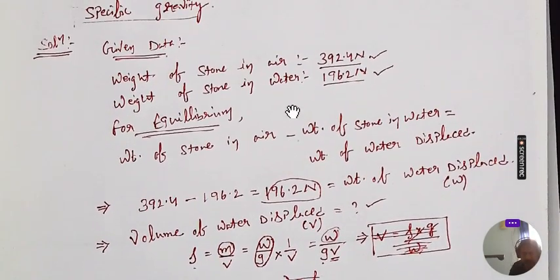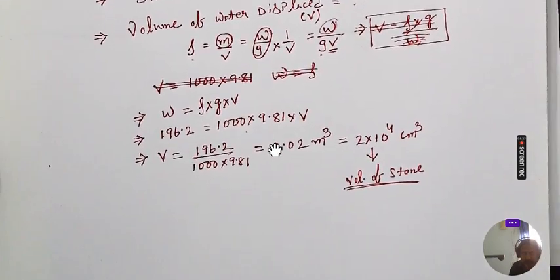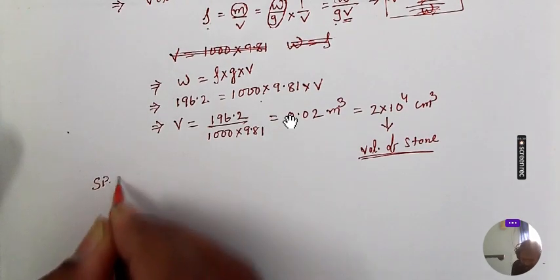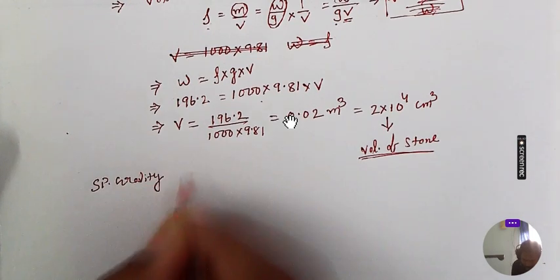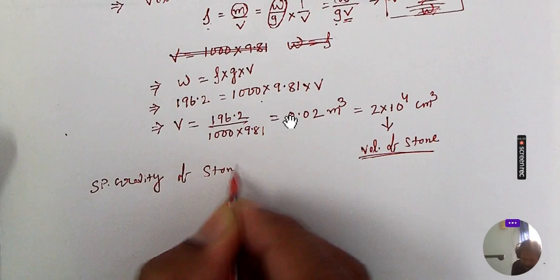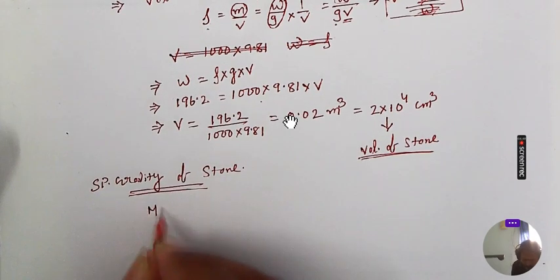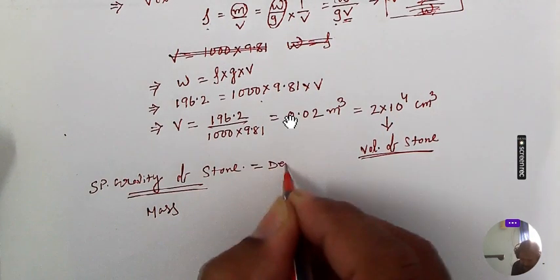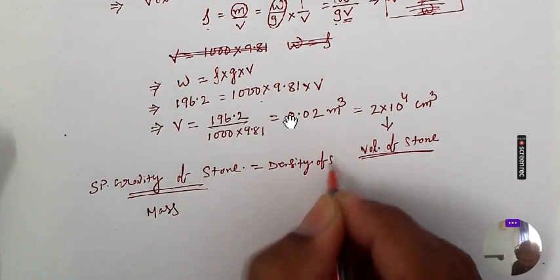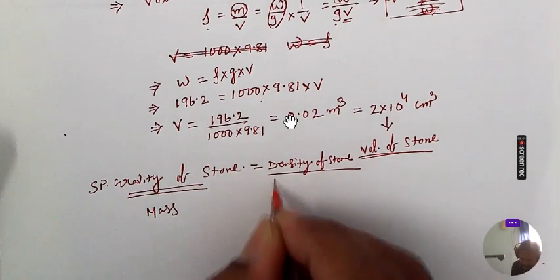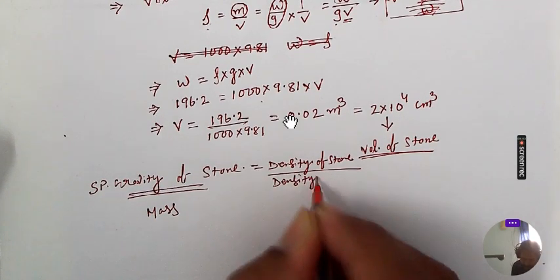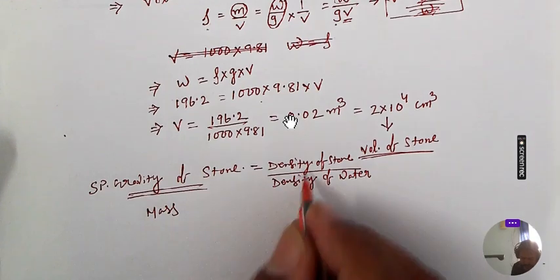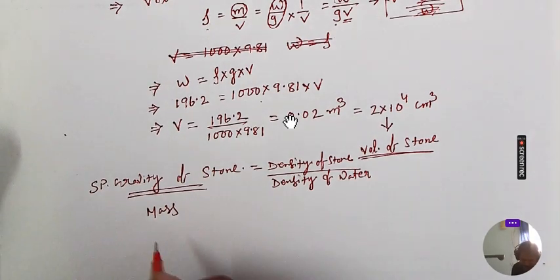Now the second part asks for the specific gravity of the stone. The formula for specific gravity is the density of the stone divided by the density of the standard fluid. Here the standard fluid is water, and the density of water is 1000 kg/m³. We need to calculate the density of the stone.